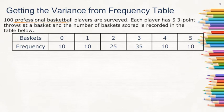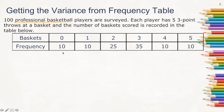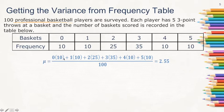Let's look at an example — getting the variance from a frequency table. This is the same example from the previous video about expected value. 100 professional basketball players are surveyed; each player has five three-point throws and the number of baskets scored is recorded. The mean is the summation of the product of baskets and frequency divided by total frequency, which gives us 2.55.